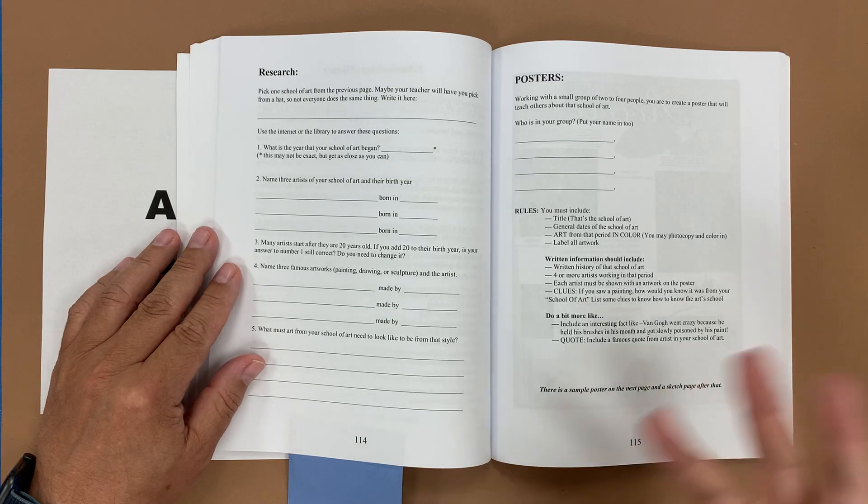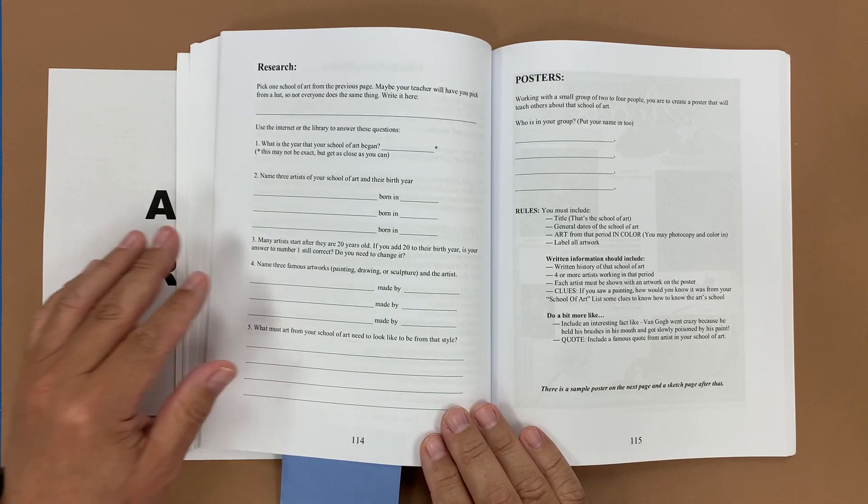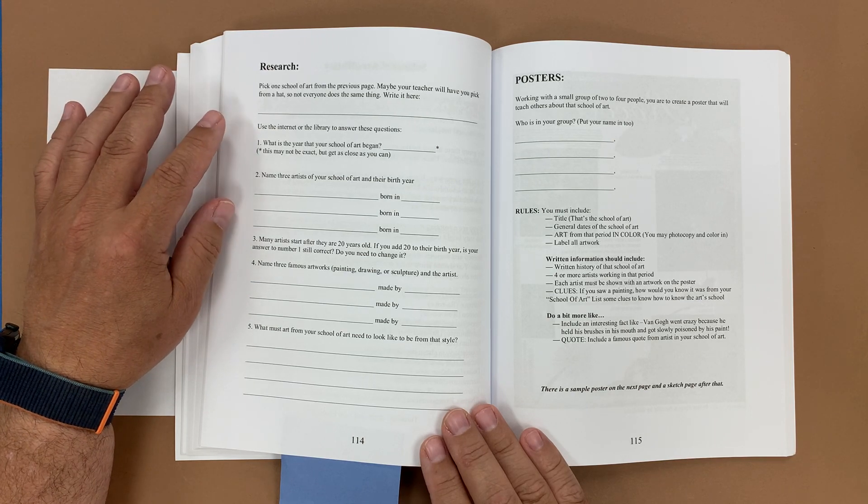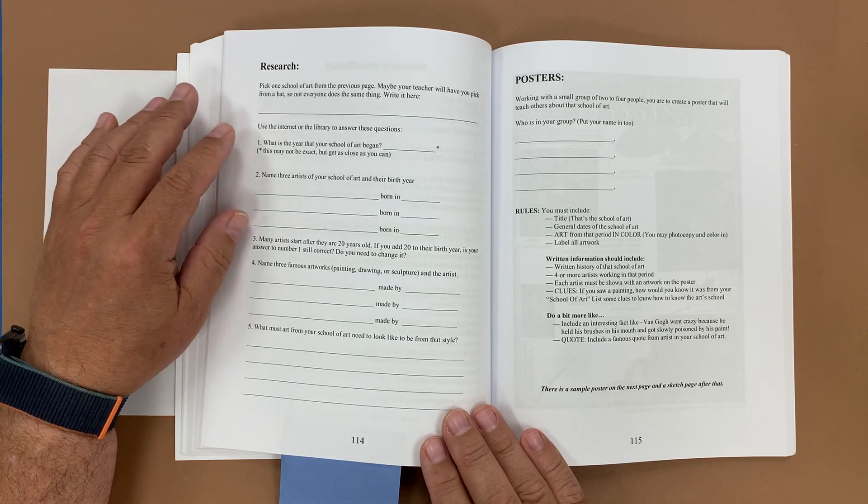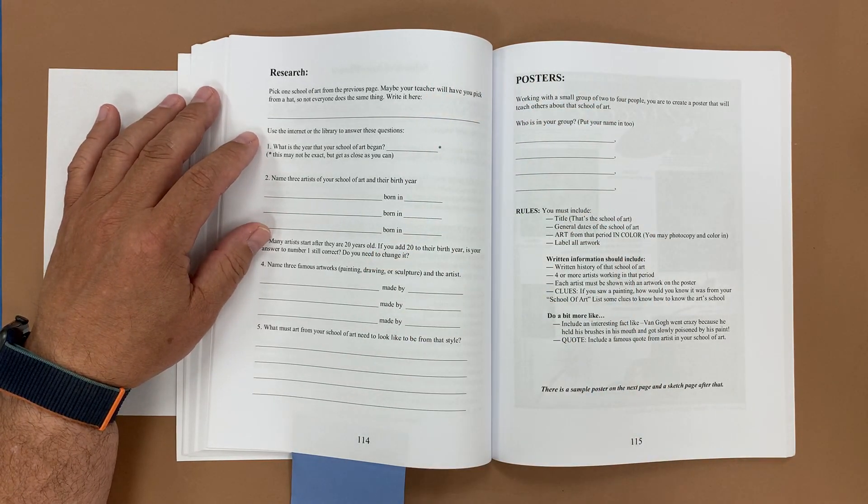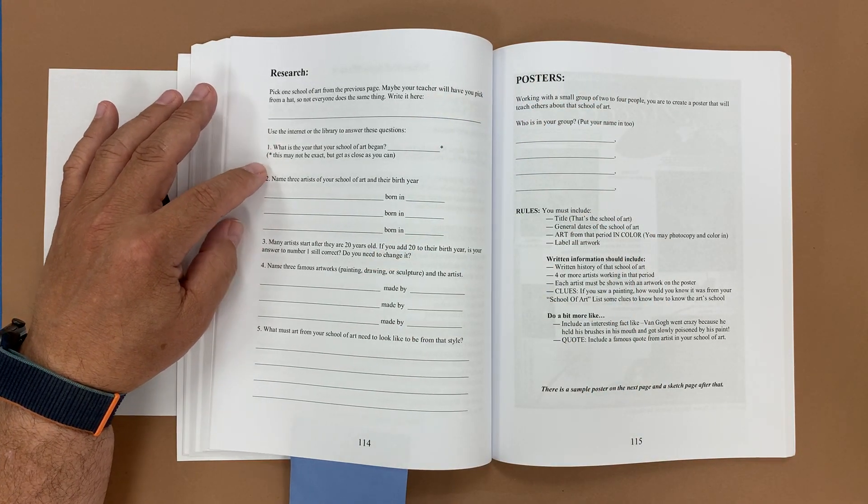Maybe one semester you do one and another semester you do something different. So here they would pick a school of art from the previous page. Maybe your teacher will have you pick from a hat so that not everybody has the same thing. You would write it here using the internet or the library to answer these questions.